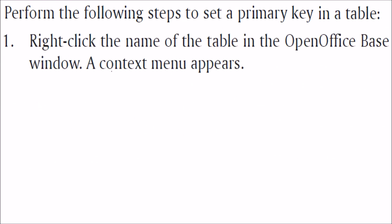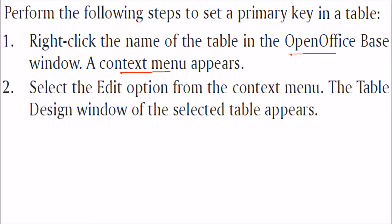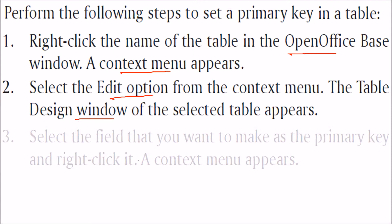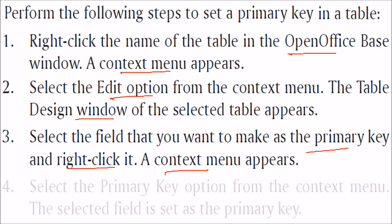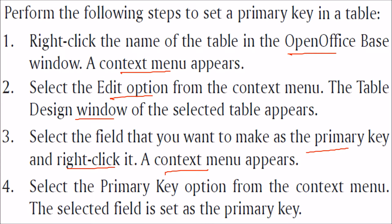To set the primary key in a table, right-click the name of the table in the Open Office Base window. A context menu will appear — select the Edit option. The table design window of the selected table will appear. Select the field you want to make the primary key and right-click it. A context menu will appear; select the Primary Key option. The selected field will be set as the primary key.